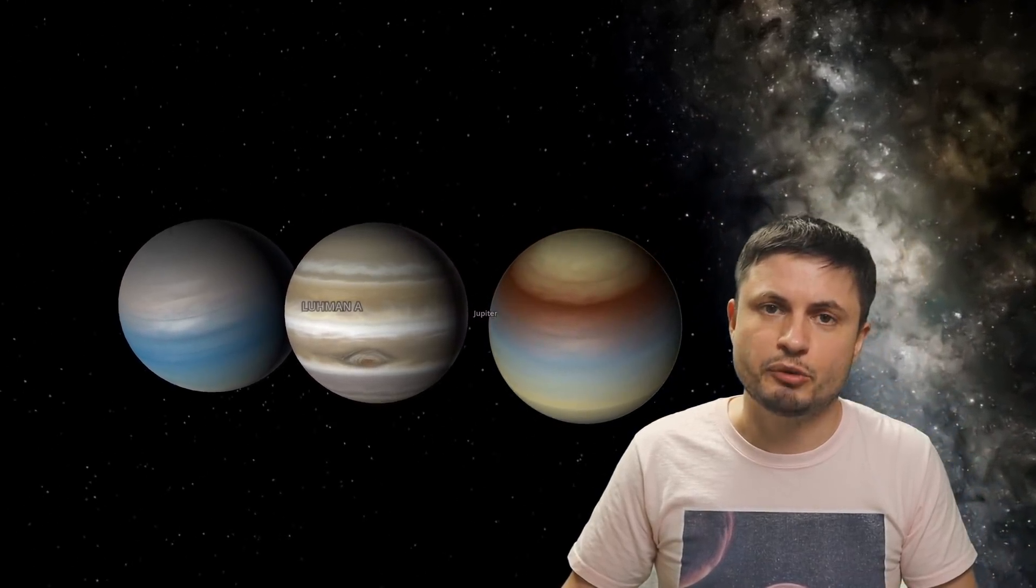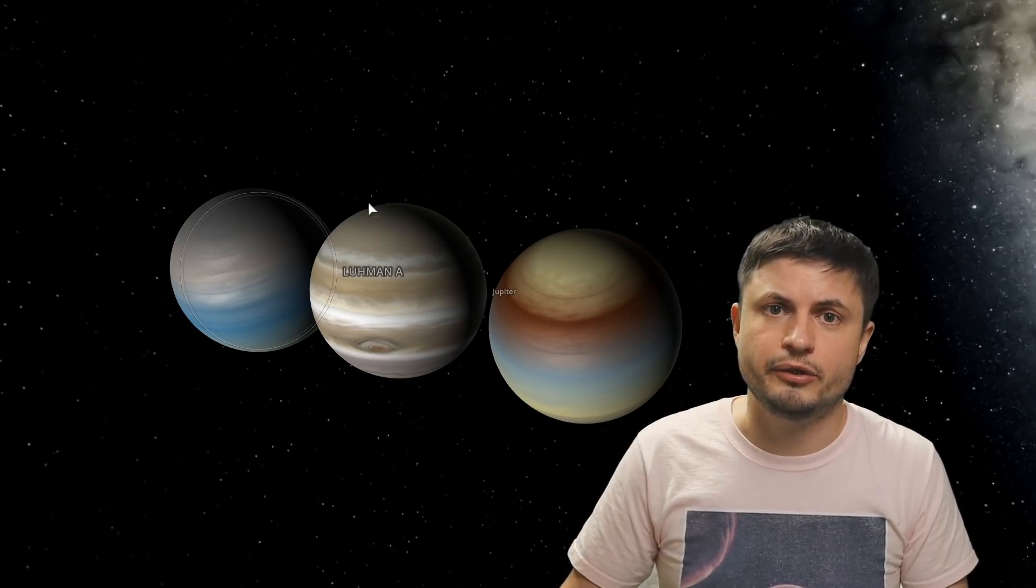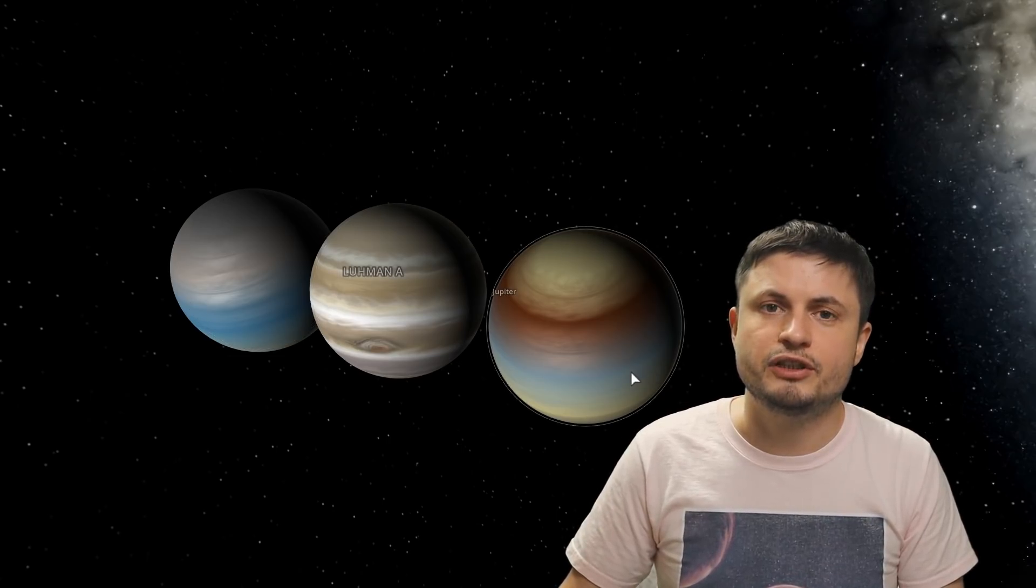But you can also learn more about this in one of the previous videos that might actually pop up somewhere above my head. In terms of size though, they're not very different from Jupiter, meaning that they just have much higher density. For example, if I were to try to simulate them in Universe Sandbox, this is how Jupiter, Luhman A and Luhman B would look like, with the density of the larger object being about nine times the density of planet Earth, and the one here being about seven to eight times more dense. But as you can see, in terms of size and I guess even in terms of appearance, they're not really that different.